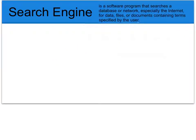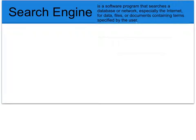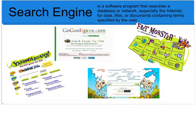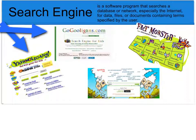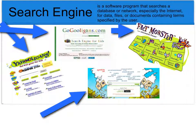A search engine is a software program that searches the database or network — especially the Internet — for data, files, or documents containing terms or words specified by the user. There are several search engines I like to use in my classroom: Yahooligans, GoGooligans, FactMonster, and Quintura Kids. These are all search engines that allow you to put in a word or phrase and search the Internet for information.